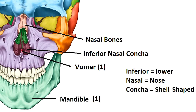Next we have the inferior nasal conchae — these bones are easy to locate if you let the name help you out. 'Inferior' means lower, 'nasal' means related to the nose, and 'concha' means shell-shaped. Put them together and you've got shell-shaped bones in the lower part of the nose. Boom! Easy peasy.